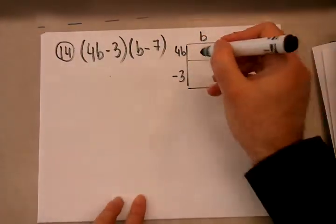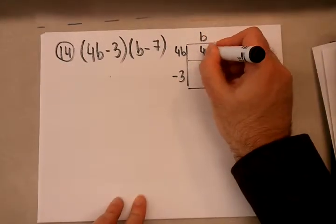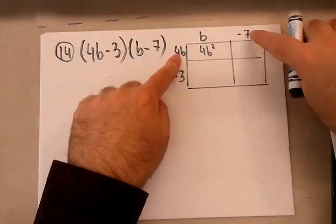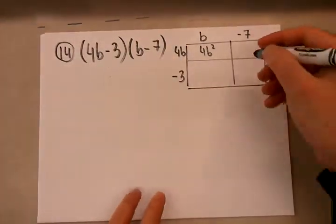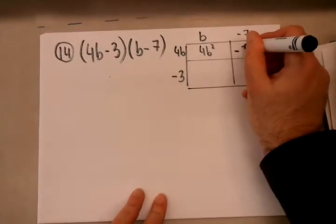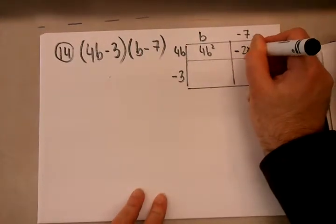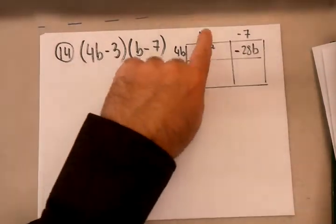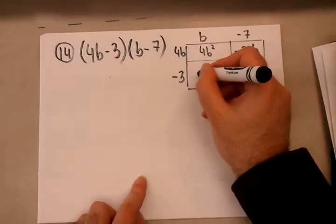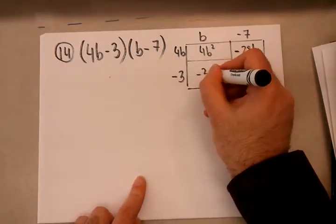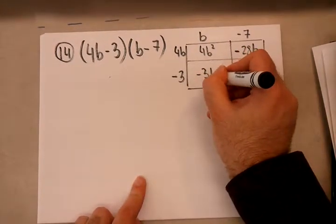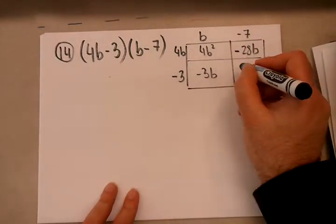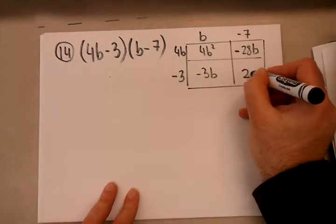Then I do my multiplication: 4b times b, which is 4b squared. Then 4b times negative 7, that's negative 28b. Then negative 3 times b, which is negative 3b. And then negative 3 times negative 7, which is a positive 21.